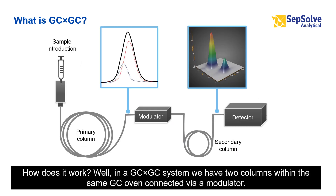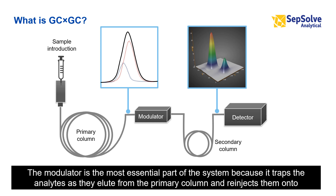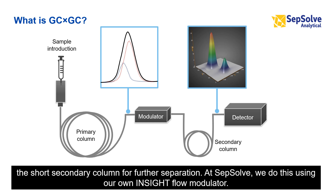How does it work? In a GC×GC system, we have two columns within the same GC oven, connected via a modulator. The modulator is the most essential part of the system, because it traps the analytes as they elute from the primary column and re-injects them onto the short secondary column for further separation.